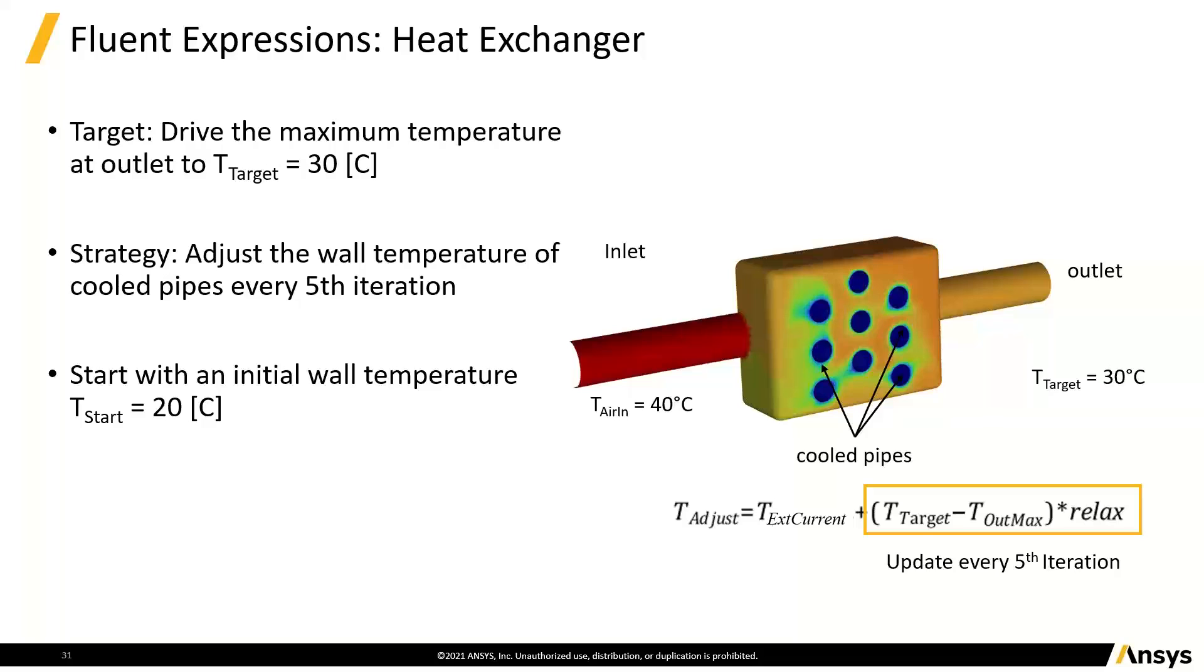We'll do it every fifth iteration so that we give the flow a chance to settle down. We don't want to do things every iteration because that has a tendency to be rather lumpy and maybe not as quick to converge.